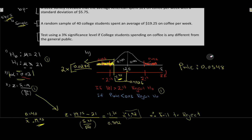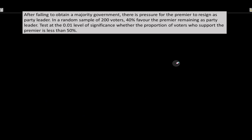That's our first question. Let's carry on to the next one. Again, I recommend you read through it first and try to figure it out on your own before I pick it up. After failing to obtain a majority government, there is pressure for the Premier to resign. In a random sample of 200 voters, 40% favor the Premier remaining as party leader.